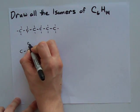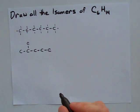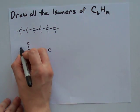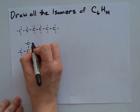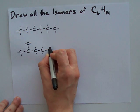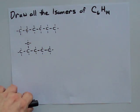Now, one of the isomers has the carbon sticking out here, and notice the number of hydrogens. Counting: 1, 2, 3, 4, 5, 6, 7, 8, 9, 10, 11, 12, 13, 14. It's still C6H14.